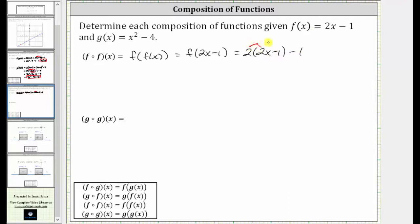We distribute 2, and then combine like terms. 2 times 2x is 4x. 2 times negative 1 is negative 2, giving us minus 2. And then we have minus 1. Combining like terms, we have 4x minus 3. f of f of x is equal to 4x minus 3.